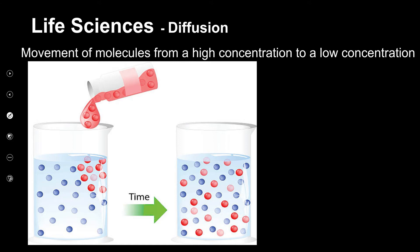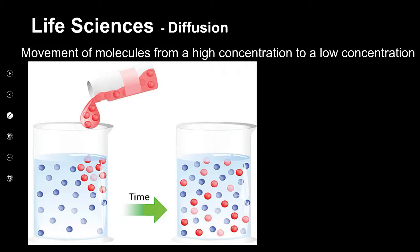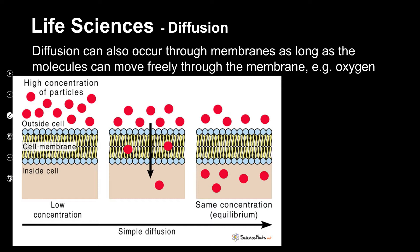First is diffusion, which you should have done in natural science earlier in high school. That is how molecules move from a high concentration to a low concentration. If a drop of syrup is placed into a beaker of water, within a short space of time those syrup molecules would have spread throughout the entire beaker. Diffusion can also occur through membranes as long as the molecules — for example, oxygen — can move freely through the membrane.